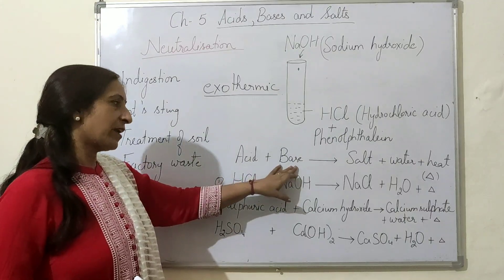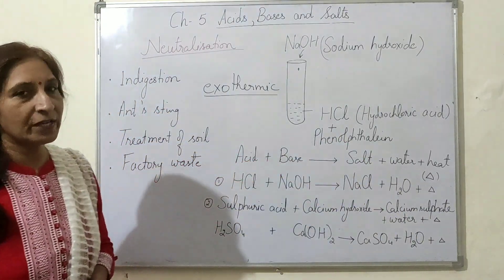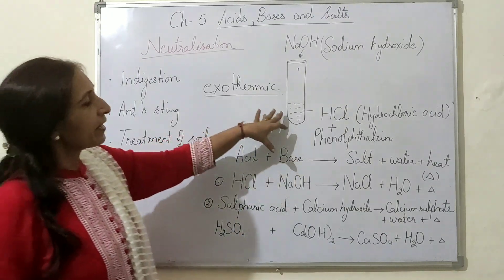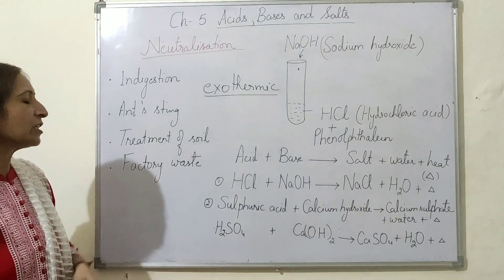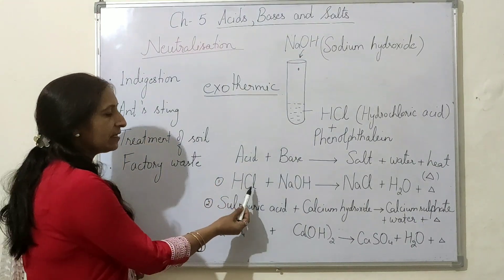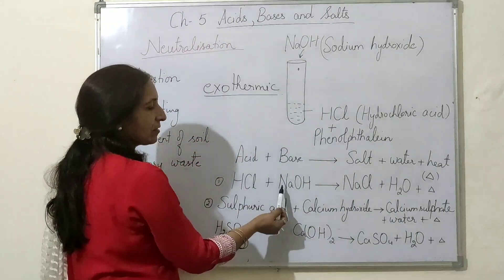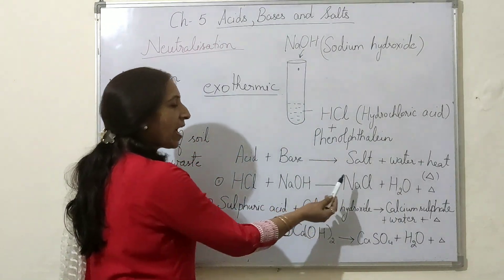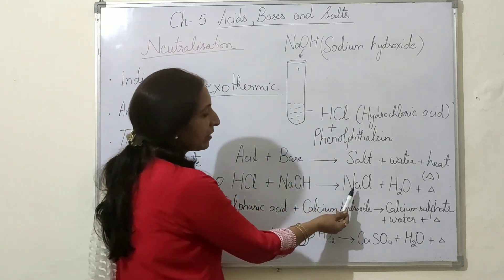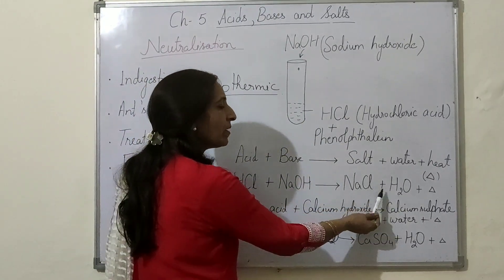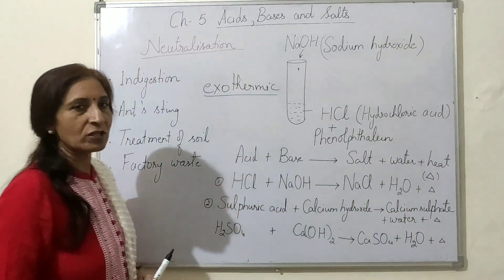The chemical equation for the experiment we did: HCl (hydrochloric acid) plus NaOH (sodium hydroxide) — the salt formed is sodium chloride plus H₂O (water) plus delta, meaning heat was produced.